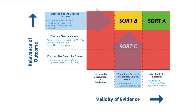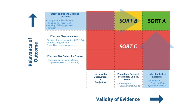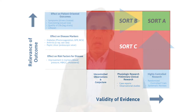SORT A information — the highest quality information we have — is both valid and relevant. It comes from trials that evaluated patient-oriented outcomes, and it is valid in that it's from randomized controlled trials or systematic reviews that are done well.